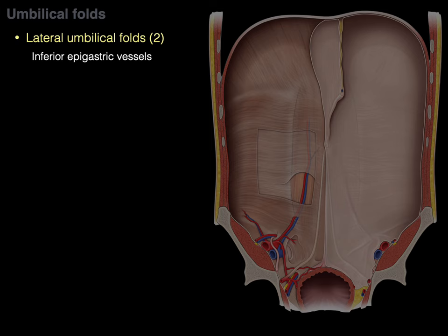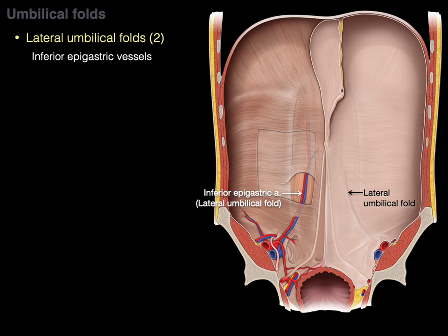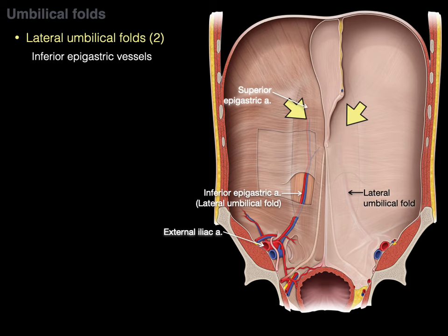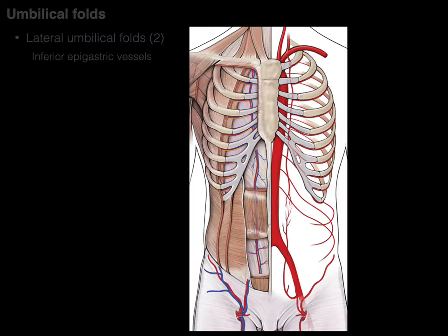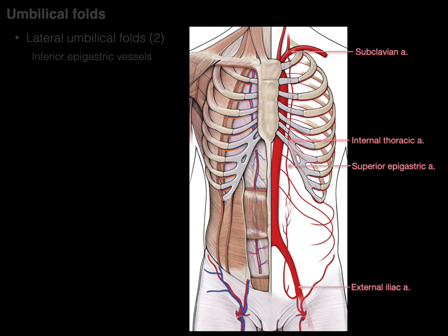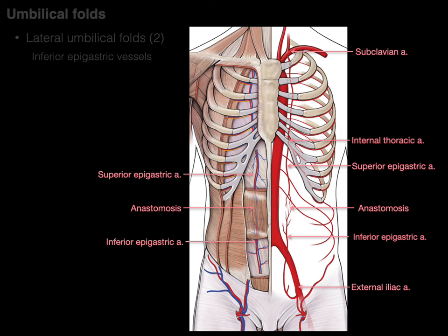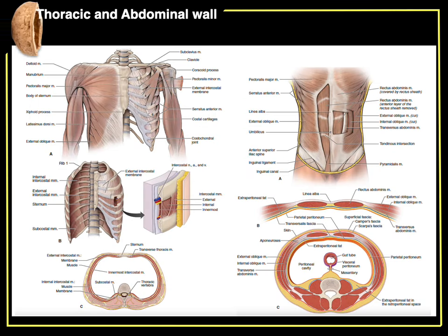The two lateral umbilical folds house the inferior epigastric vessels. When you strip away the parietal peritoneum, the lateral umbilical fold hides the inferior epigastric artery, which arises from the external iliac artery and courses up on the internal surface of the abdominal wall. It forms an anastomotic connection with the superior epigastric artery, which is a branch of the internal thoracic artery descending from the subclavian. That anastomosis, deep to the rectus abdominus, is between the superior epigastric and inferior epigastric arteries — and that is the thoracic and abdominal wall in a nutshell.